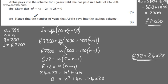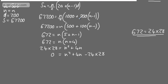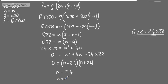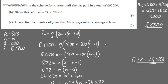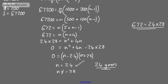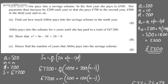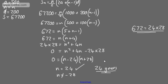In part C for two marks, it says hence find the number of years that Abby pays into the saving scheme. If we factor this, we get N minus 24 multiplied by N plus 28 equals 0. So N equals 24 or N equals minus 28. N can't be equal to minus 28 as N represents time, and time can't be negative. Therefore N is 24 years. So we've factored the quadratic, looked at the two solutions, rejected minus 28 as invalid, and stated that N is 24 years.